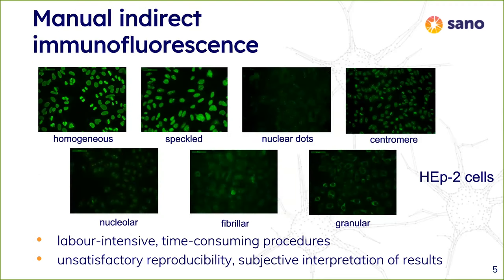In this manual process there are seven types of different fluorescence patterns of these cells. They can be homogeneous, speckled with some dots in the nuclei, centromere, nucleolar, fibrillar, or granular. Sometimes it is not obvious which type is seen on a given picture, and there can also be mixed types of these cells.